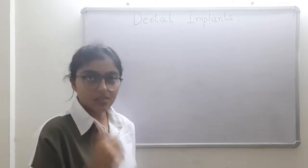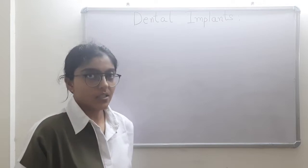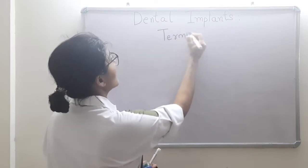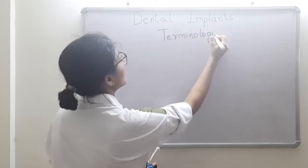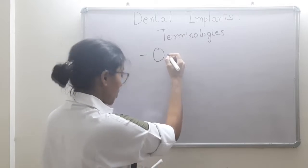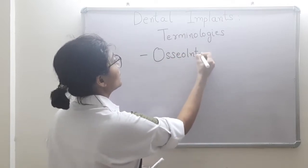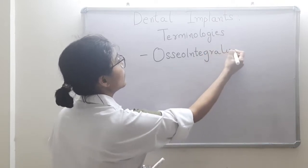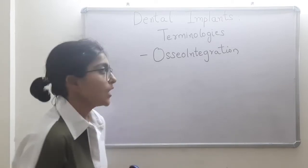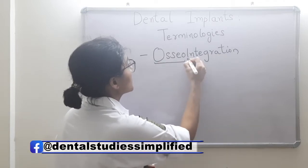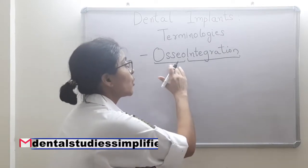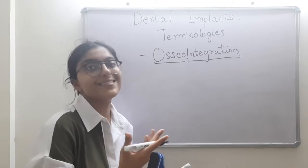We will be mainly discussing two topics: terminologies and then armamentarium. Under terminology, our most important term is osseointegration. Osseo means bone, integration means to integrate, to unite, to meet. The standard definition as per Brånemark is direct contact or direct meeting of the bone and the implant.